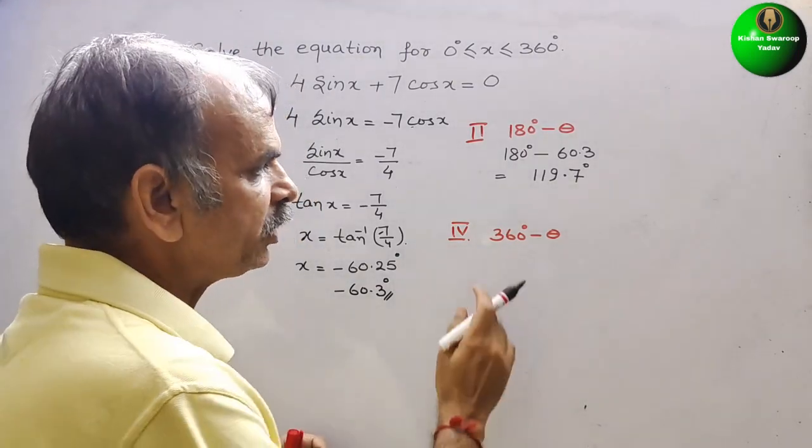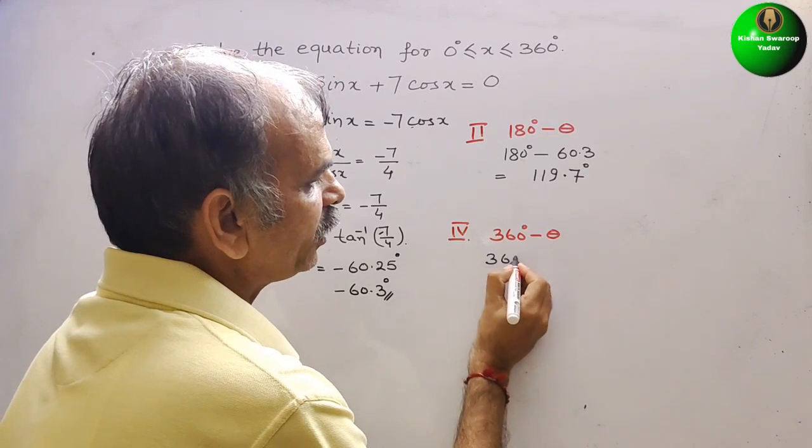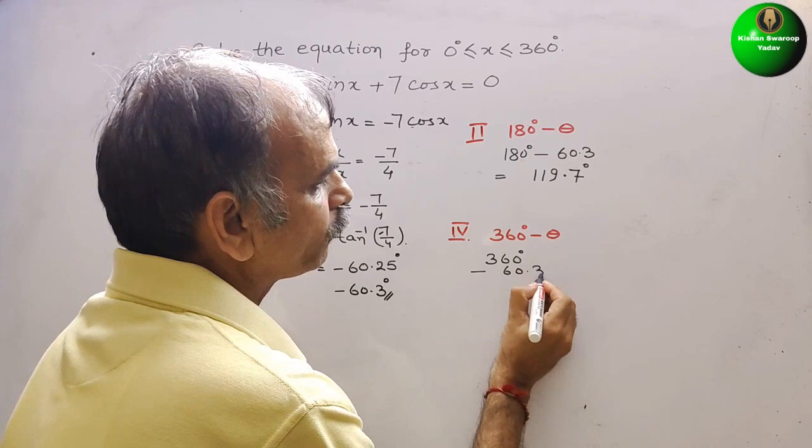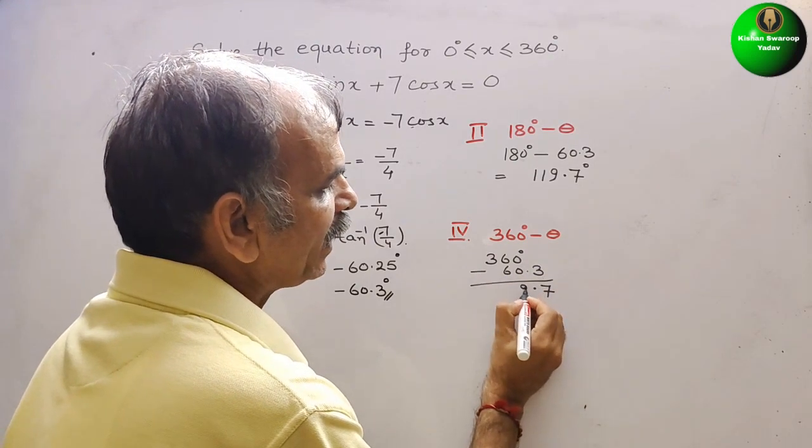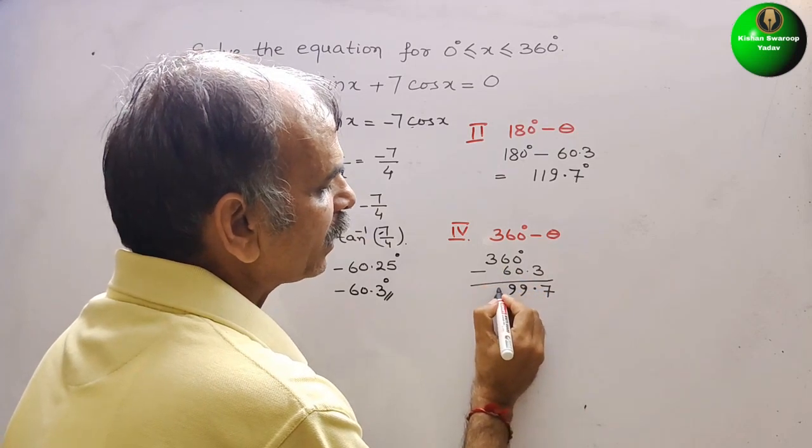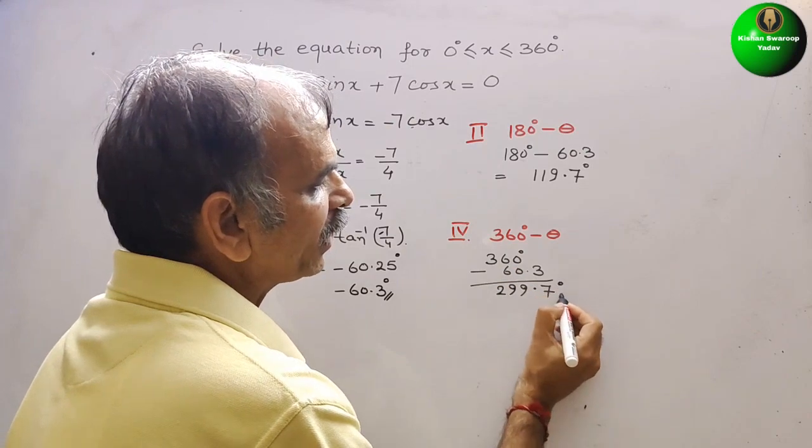Second solution: 360 minus this. So here we will write 360 minus 60.3. So this will get 0.7, 9, and again 9. And this will be your 2. So 299.7 degrees.